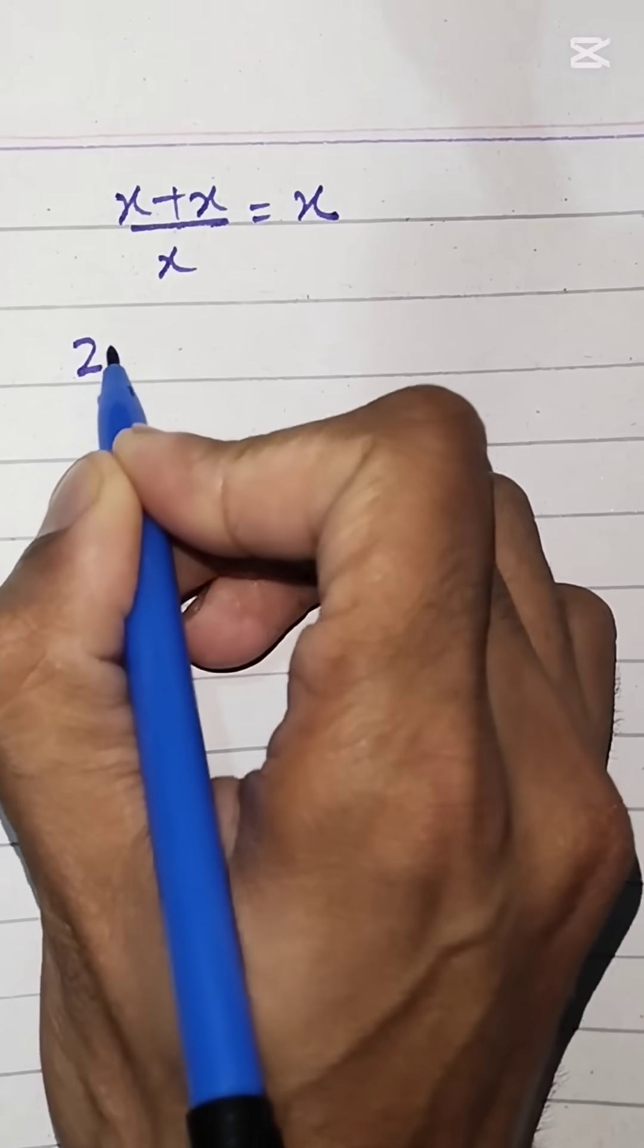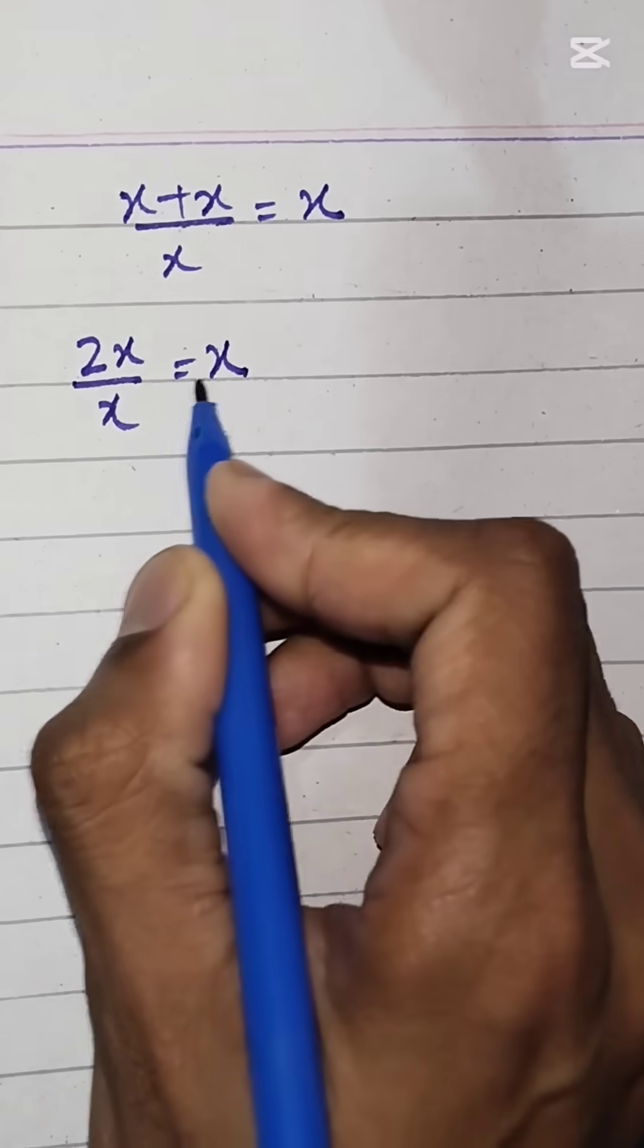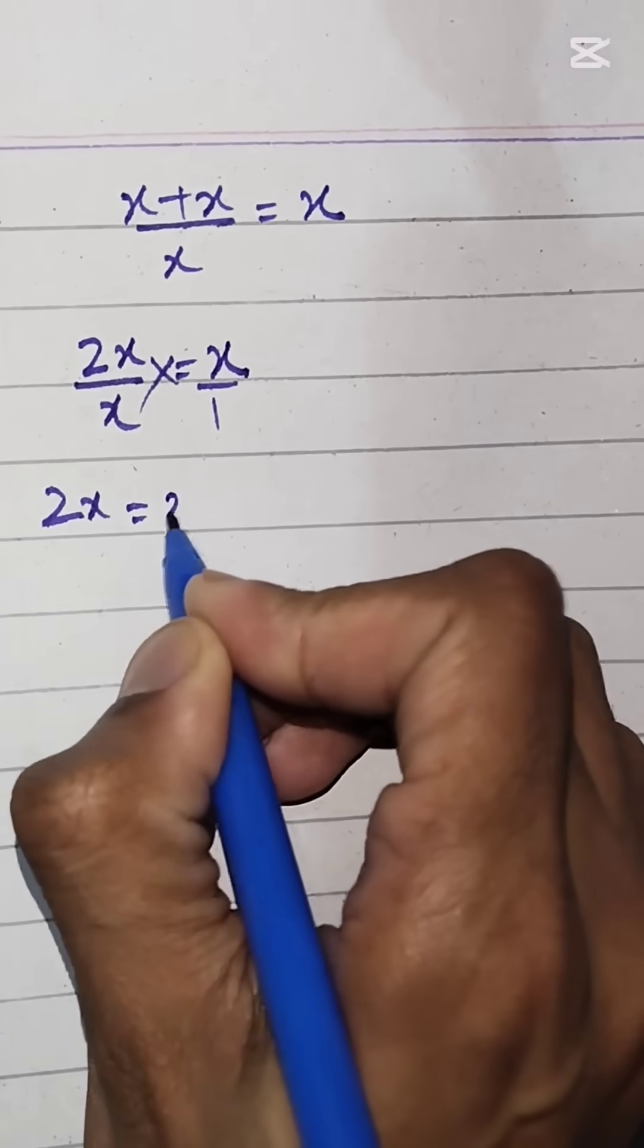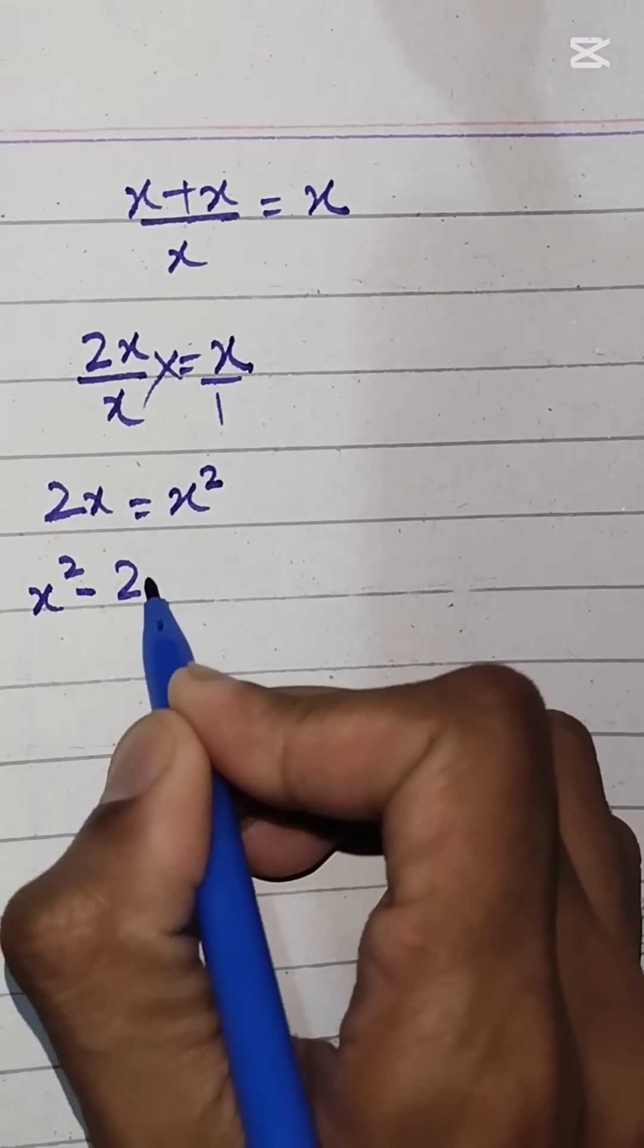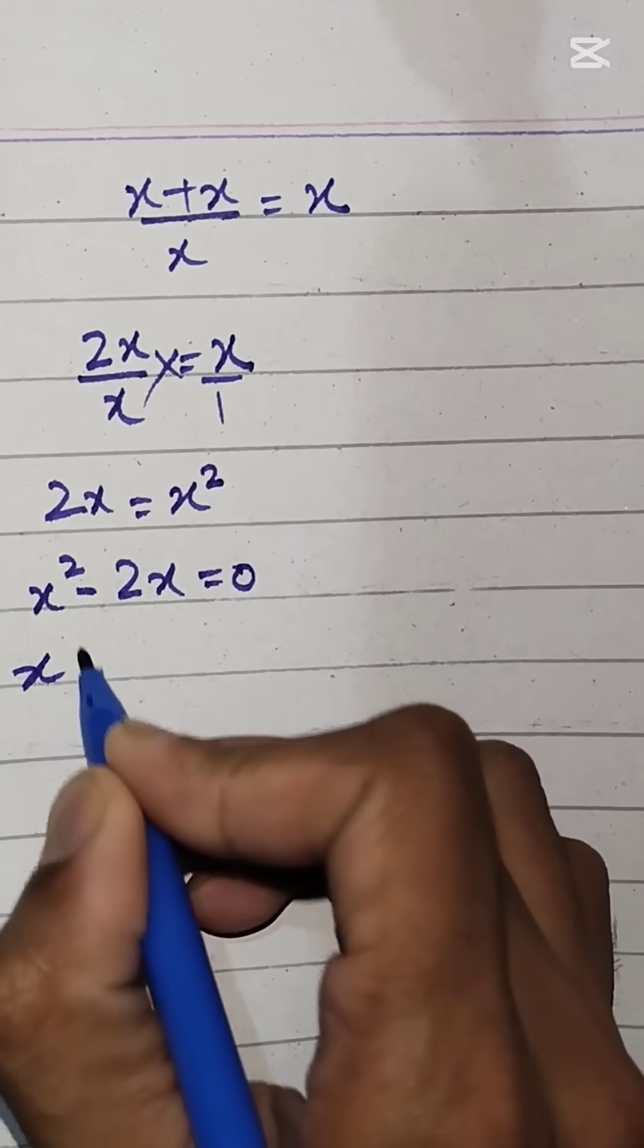Where x plus x is 2x over x equals x. By cross multiplication, 2x equals x squared. Subtracting 2x on both sides, we get x squared minus 2x equals 0. By taking x common from both terms, we're left with x times (x minus 2) equals 0.